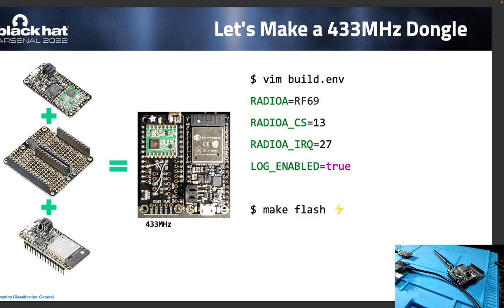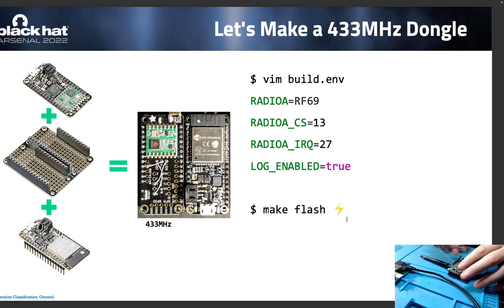To build the firmware: download RFQuack source code, specify that you have one radio and its type (RF69 in this case), specify connections — chip select on pin 13, IRQ on pin 27, reset pin on pin 26 or 32 — enable the log, then run 'make flash' and that's it. Let me show you how it works.